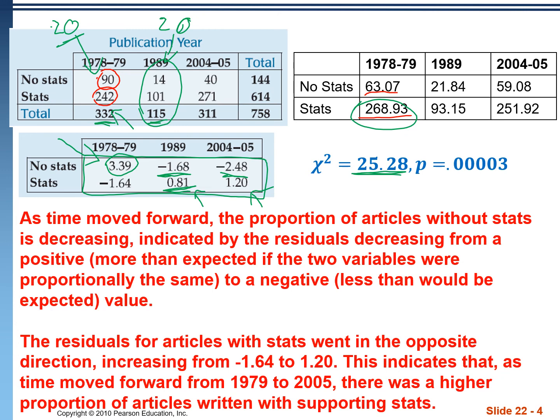So the way we would write it out: as time moved forward, the proportion of articles without stats is decreasing, indicated by the residuals decreasing from a positive — meaning more than expected if the two variables were the same — to a negative, meaning less than the expected value. Residuals for articles with stats went in the opposite direction, increasing from negative 1.64 to 1.20. This indicates that as time moves forward from 1979 to 2005, there's a higher proportion of articles written with supporting statistics.